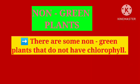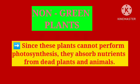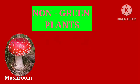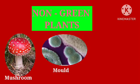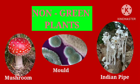There are also some non-green plants that do not have chlorophyll. Since these plants cannot perform photosynthesis, they absorb nutrients from dead plants and animals. Mushroom, molds, and Indian pipe are some examples.